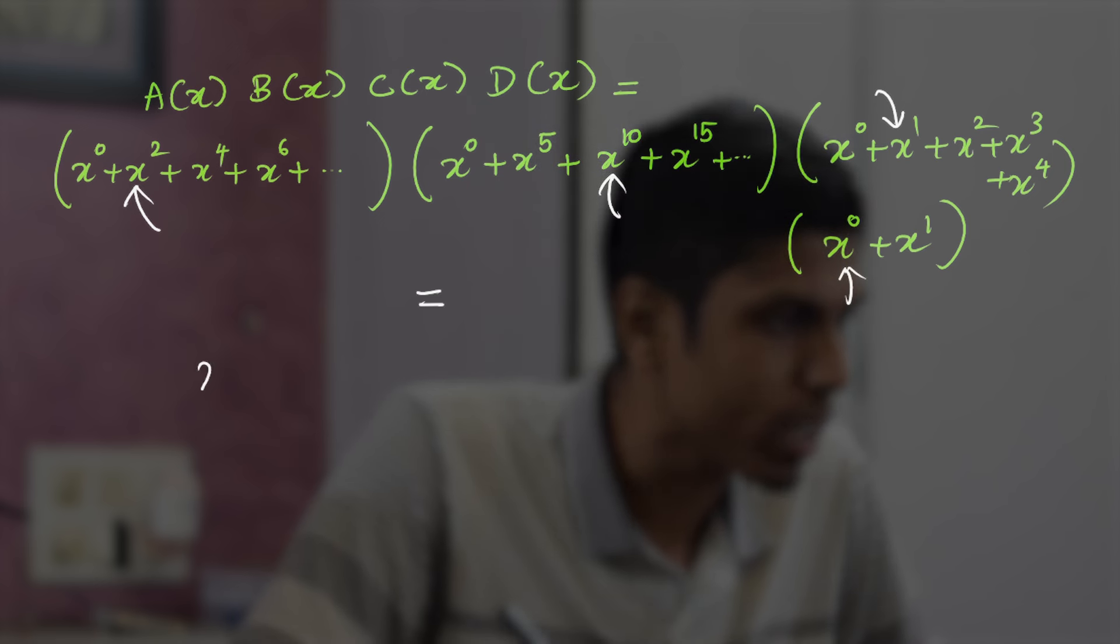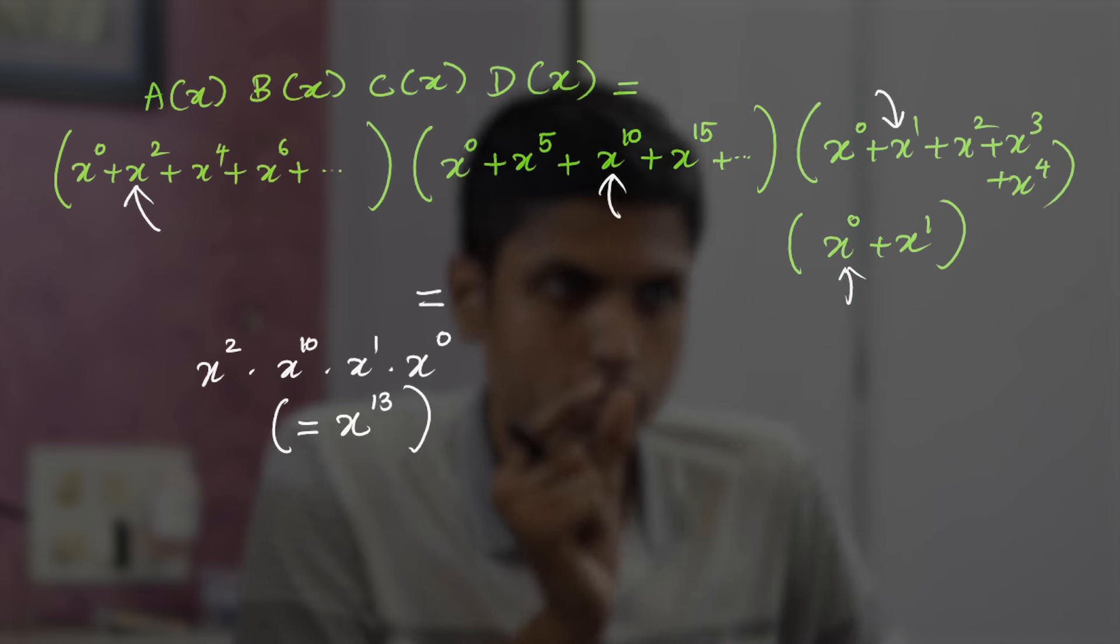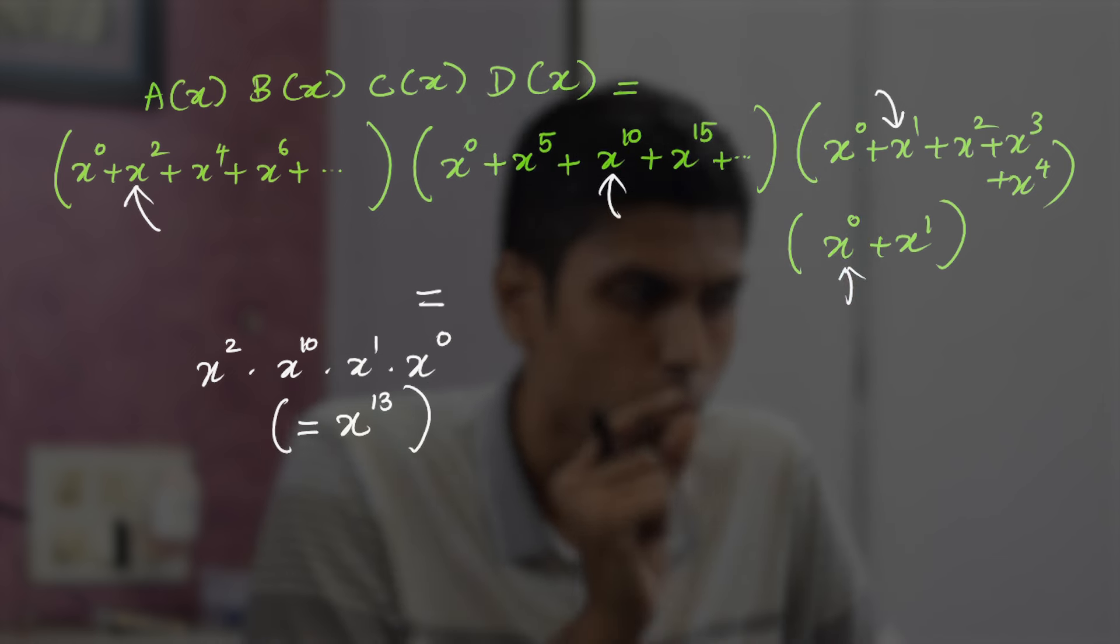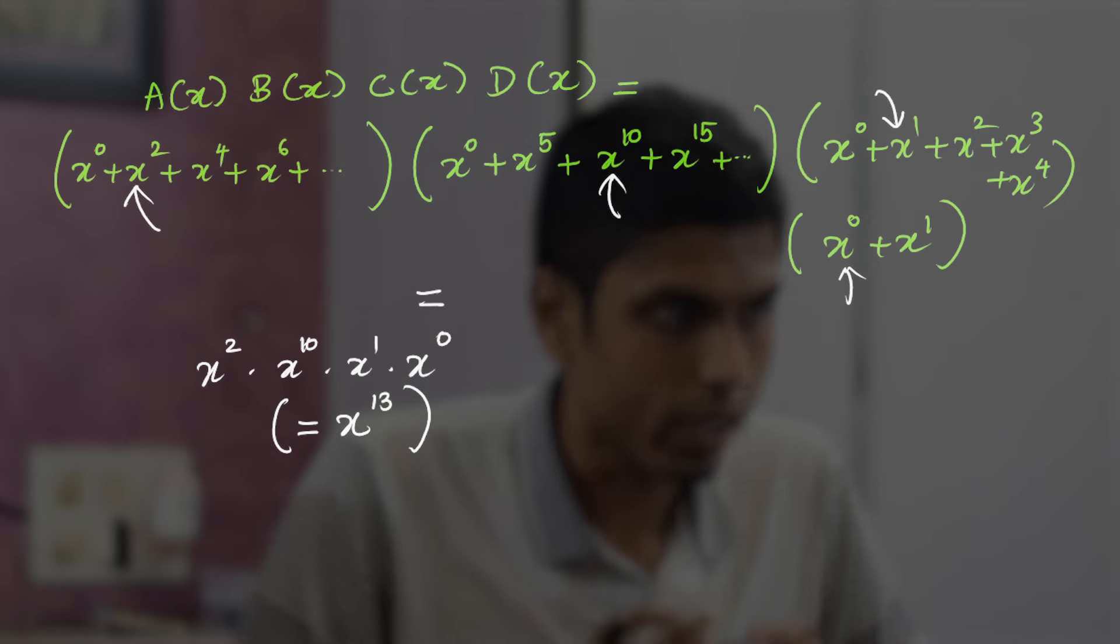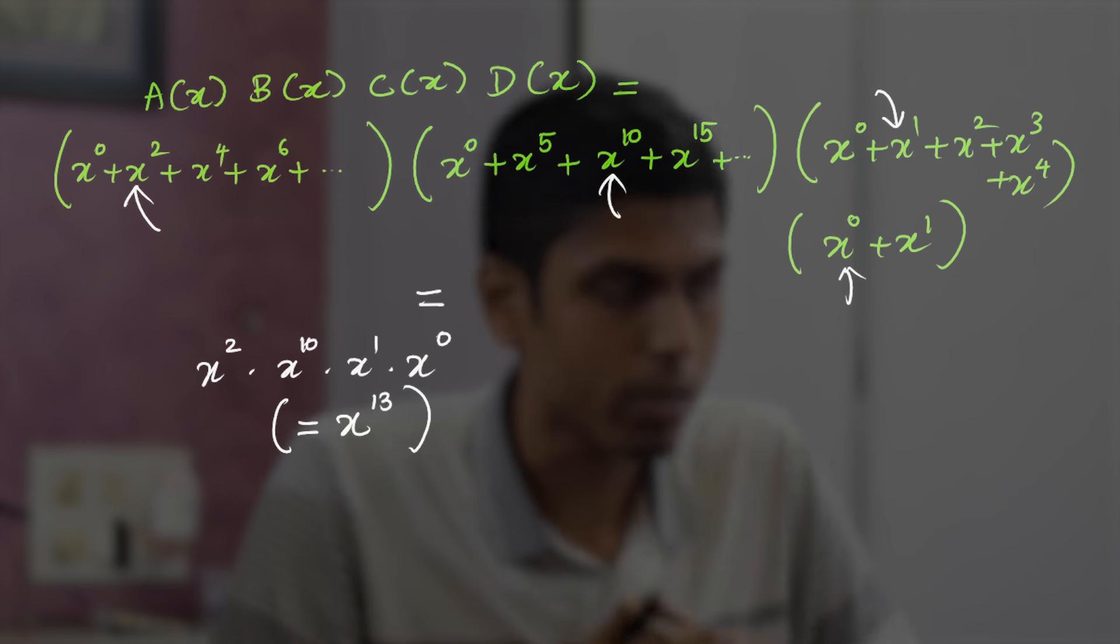So this would be x^2 times x^10 times x^1 times x^0, and you can rewrite this as x^13. So this forms this particular choice, forms one term x^13. Like that, there could be a lot of x^13 terms. Okay, let's remember the algebraic expansion in that way.